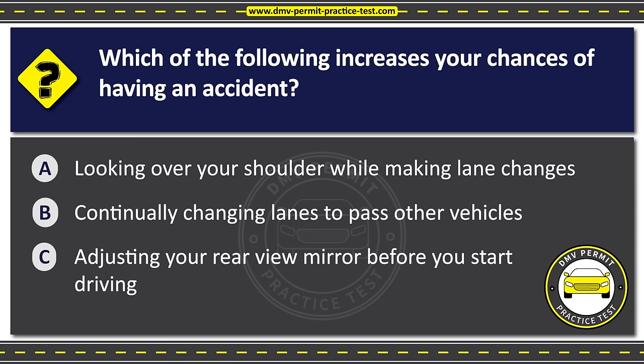Question thirty-five. You must make a written report SR-1 to DMV within ten days if you. Option A: Are in an accident that causes $1,000 in damage. Option B: Plan on being out of the state for more than 30 days. Option C: Refinance the remaining balance of your vehicle loan. The correct answer is Option A: Are in an accident that causes $1,000 in damage.